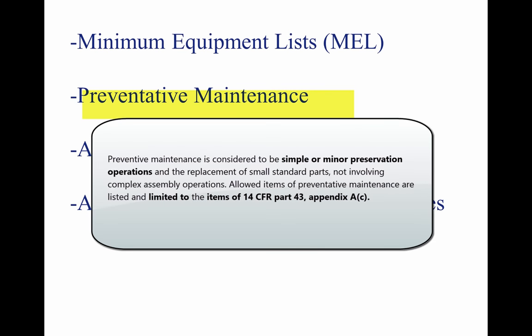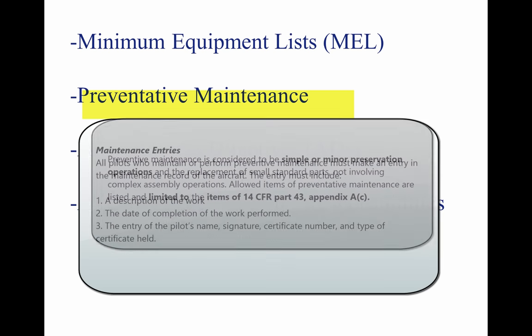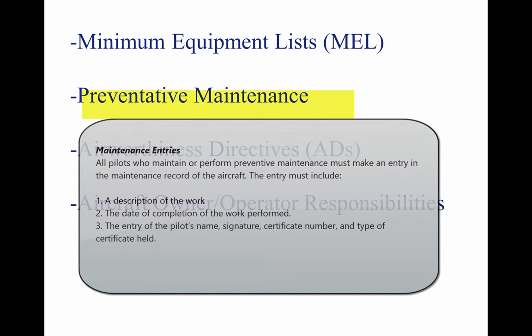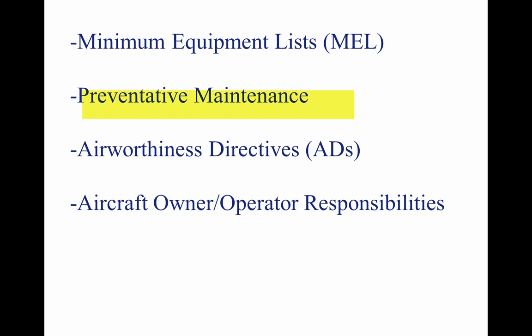Preventive Maintenance: Preventive maintenance is considered to be simple or minor preservation operations and the replacement of small standard parts, not involving complex assembly operations. Allowed items of preventive maintenance are listed and limited to the items of 14 CFR Part 43, Appendix A-C. All pilots who perform preventive maintenance must make an entry in the maintenance record of the aircraft. The entry must include: a description of the work, the date of completion, and the pilot's name, signature, certificate number, and type of certificate held.